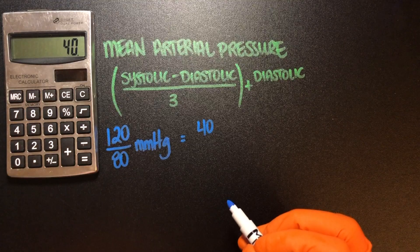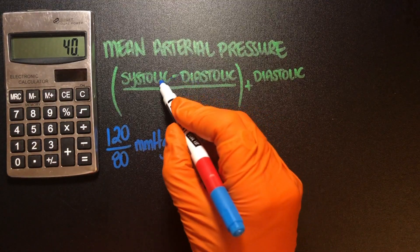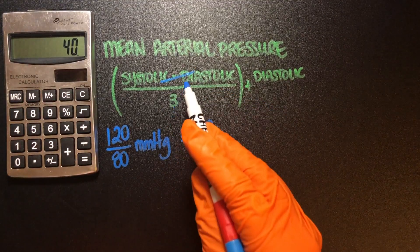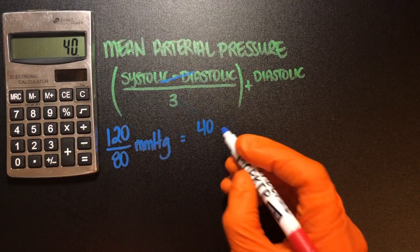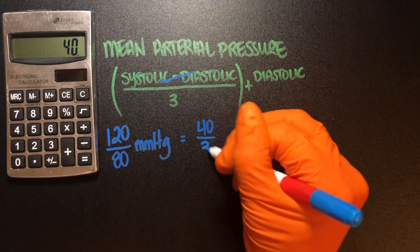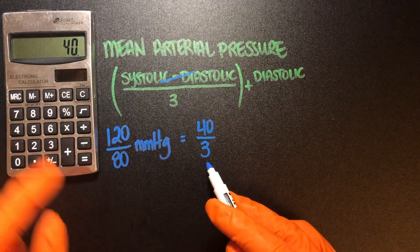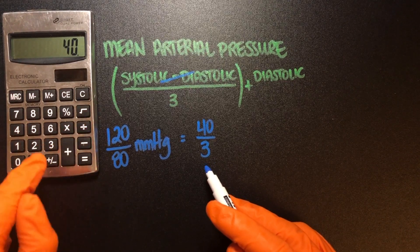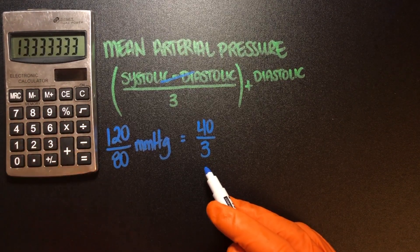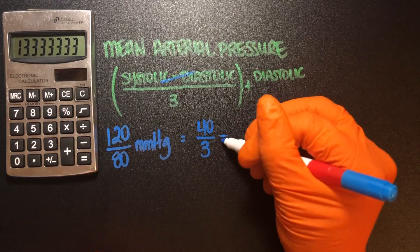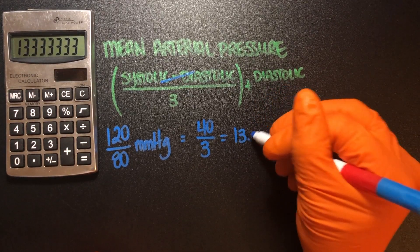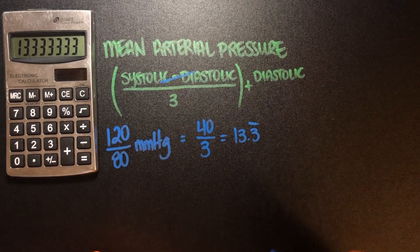Now don't hit anything on the calculator. We've taken care of this part, so now we need to divide by 3. So you will simply hit divided by 3 equals 13.3 repeating.